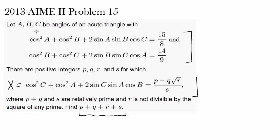Now it's time to examine these relationships in depth. I want to focus on the fact that A, B, and C are angles of an acute triangle. That tells us A plus B plus C equals 180 degrees, and since they are acute we know each of them is less than 90 degrees. Maybe that's going to help us evaluate some of these expressions.